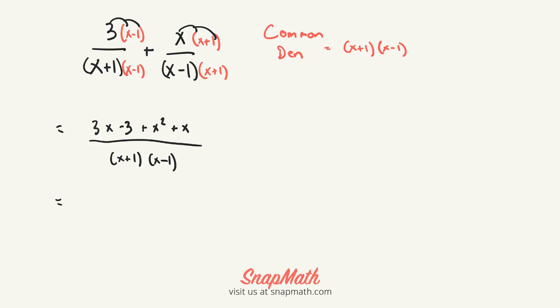The next step would be to combine your like terms. So we have x squared plus 4x minus 3, all over x plus 1 and x minus 1.